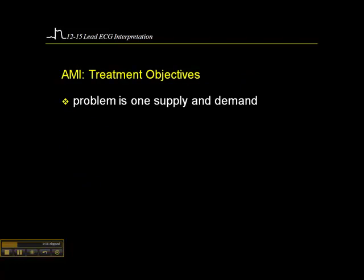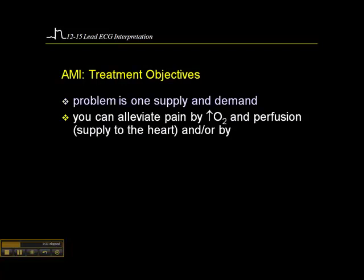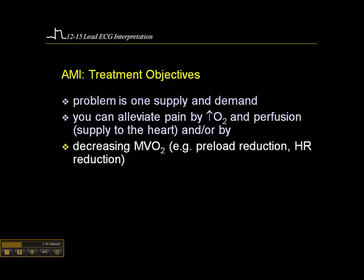The problem with acute myocardial infarction is one of supply and demand. These patients have diminished coronary blood flow in one of the vessels, or a complete occlusion of blood flow. Consequently, the supply is inadequate to meet the normal demands of the myocardium. We can alleviate pain by increasing oxygen and perfusion to the heart, or by decreasing myocardial oxygen consumption by administering drugs that reduce preload, reduce heart rate, or a combination of those two.